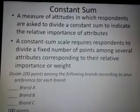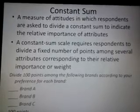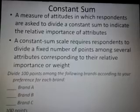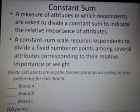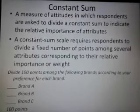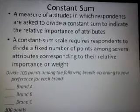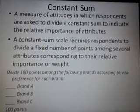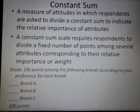So this helps in understanding the relative preference. A constant sum scale requires respondents to divide a fixed number of points among several attributes corresponding to their relative importance or weight. I hope this is clear with the example.